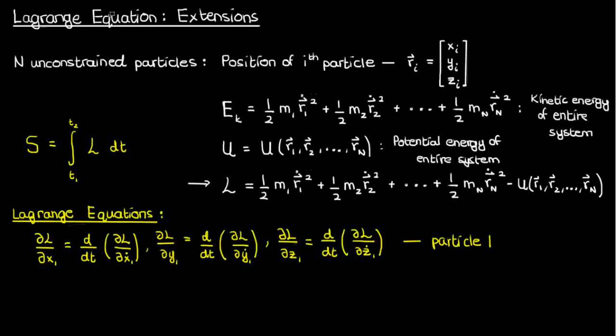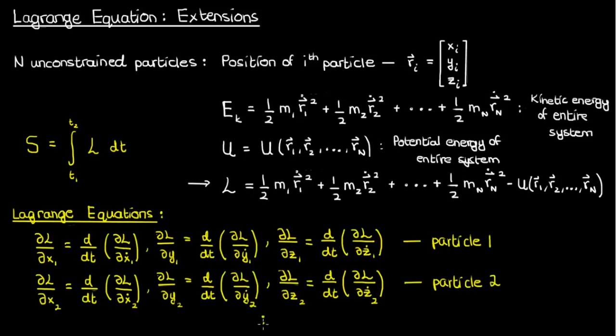So we'd have the three Lagrange equations for particle 1, the three Lagrange equations for particle 2, and so on. If we solve all of these Lagrange equations, we'll be able to determine the equations of motion — x1, y1, z1, and so on — for all the particles.